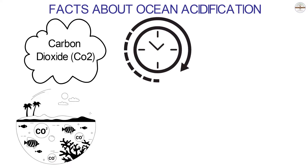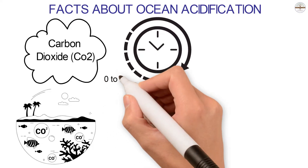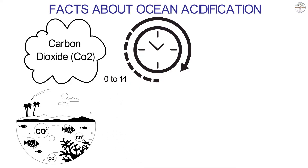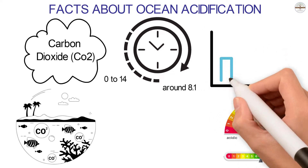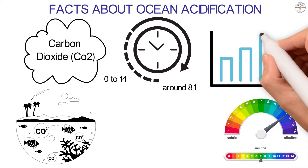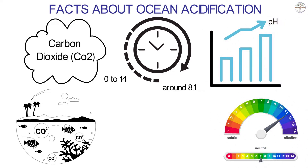Scientists use pH scales to measure ocean acidity. A pH scale has values that go from 0 to 14. The lower the value, the more acidic the substance is. The higher the value, the more basic or alkaline it is. Ocean water has a pH of around 8.1, so if the pH value goes above 7, it's alkaline.